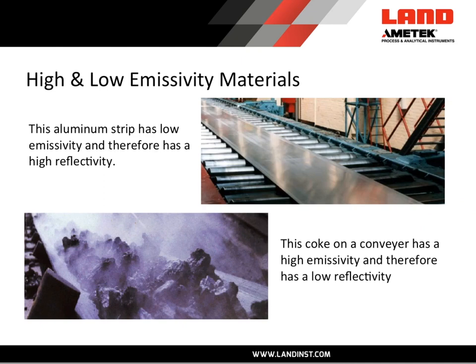In the upper photograph we see a strip of aluminum in a hot rolling mill, and our eyes show us that it is very reflective. Emissivity equals one minus reflectivity, so if something is very reflective it is not very emissive. Conversely, in the lower photograph we see coke on a conveyor belt — dark, rough, not very reflective — and therefore it has a high emissivity and a low reflectivity. Again, emissivity equals one minus reflectivity.